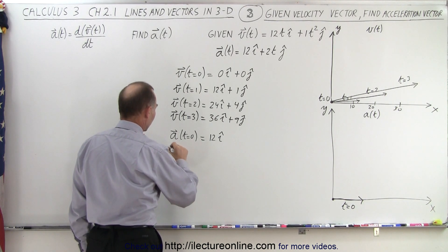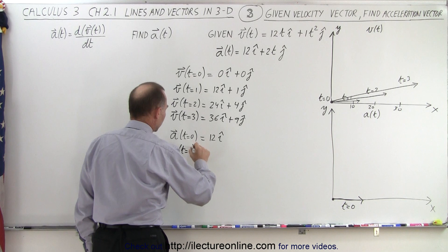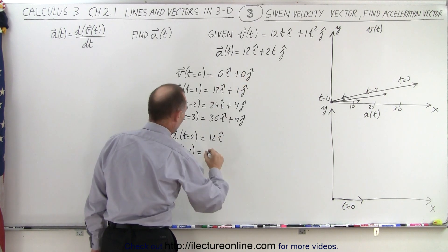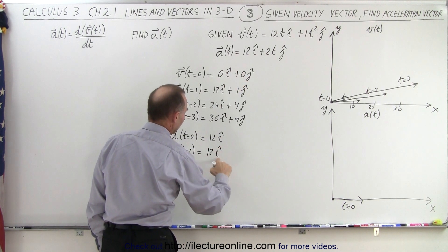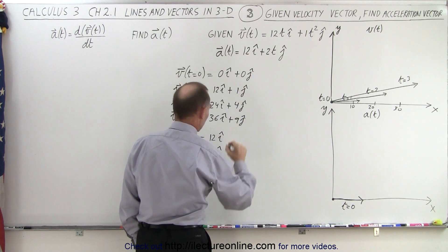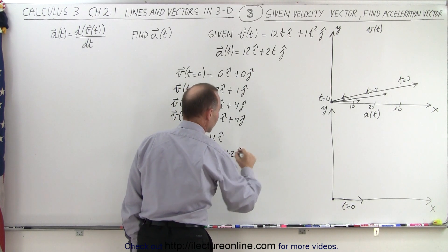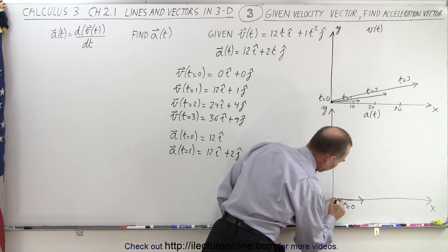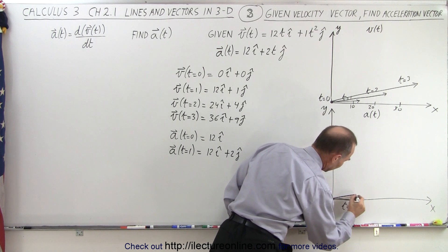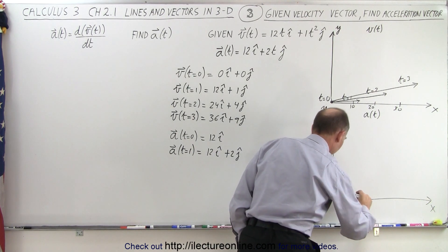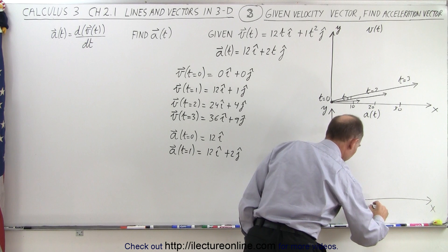The acceleration vector when t is equal to 1 is equal to 12 in the i direction — notice the x component doesn't change — but we get plus 2 in the j direction. So when t is equal to 1 we have an acceleration vector that looks like this.